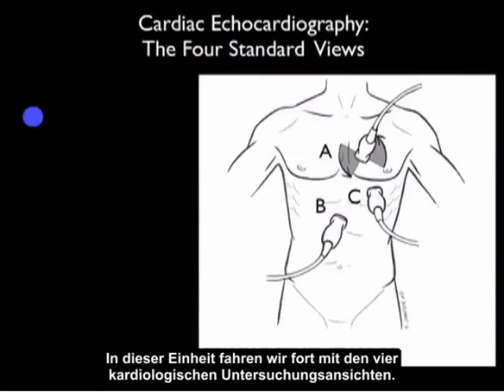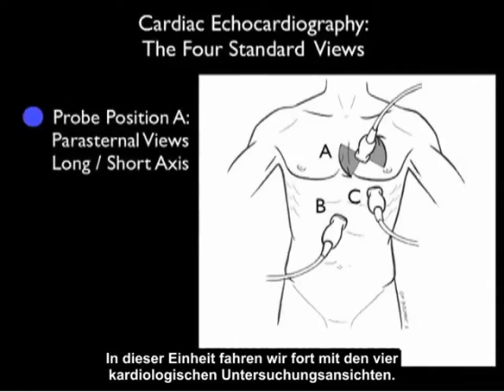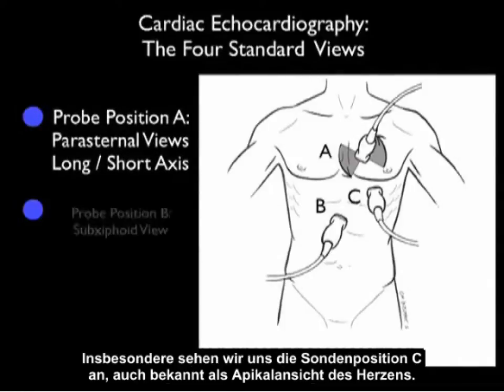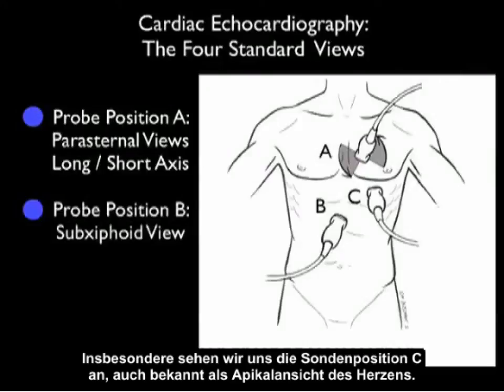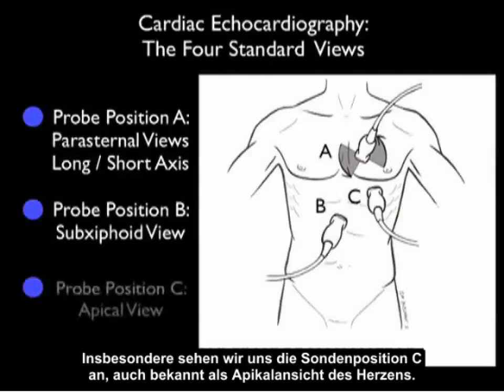In this module, we'll continue our journey down the path of the four cardiac examination views. Specifically, in this module, we're going to look at probe position C, known as the apical view of the heart.